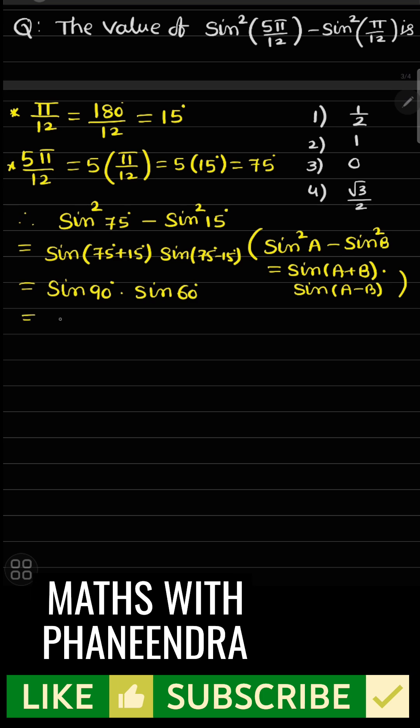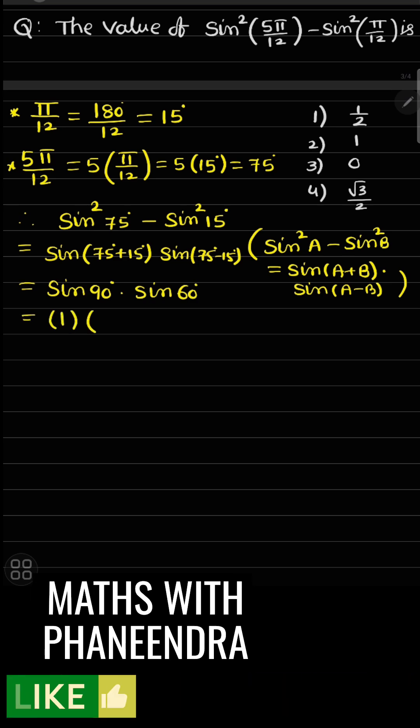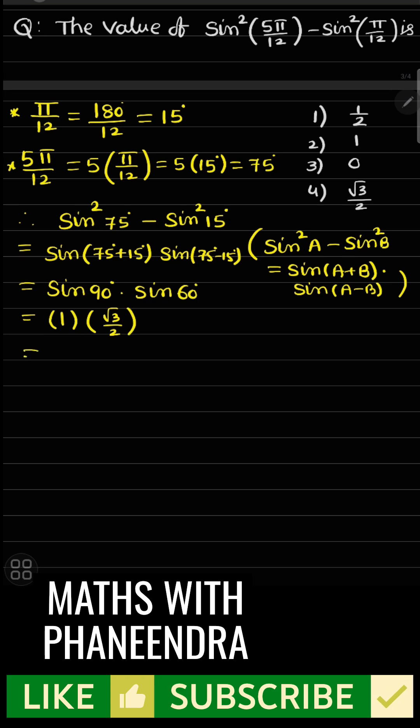That is equal to sin90° = 1, and sin60° = √3/2. So 1 × √3/2 = √3/2.